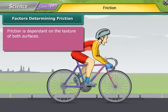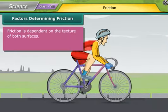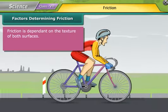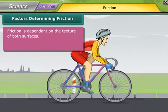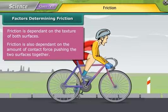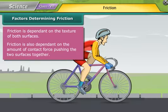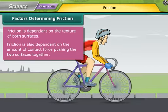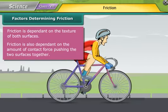Friction is dependent on the texture of both surfaces. Friction is also dependent on the amount of contact force pushing the two surfaces together.